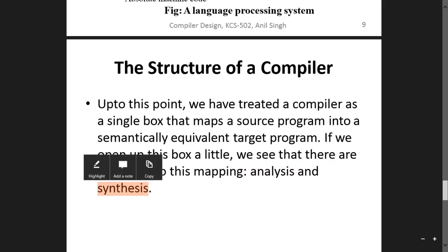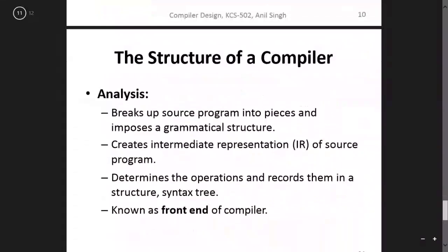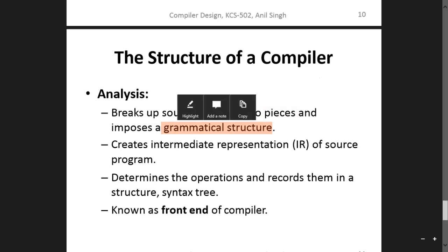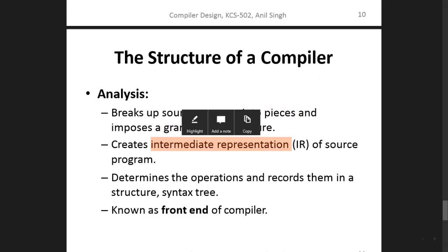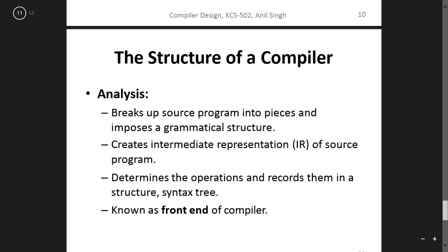Two parts come from analysis and synthesis. What is the analysis part? The analysis part breaks the source program into pieces and imposes a grammar structure. The source program is converted into small parts and its grammar structure is checked. It also creates an intermediate representation of the source program, and determines the operations and records them in a structure and syntax stream. We call this the front-end compiler.